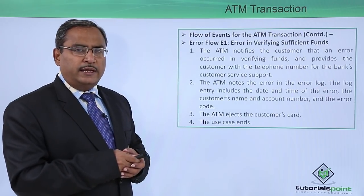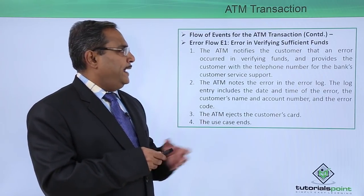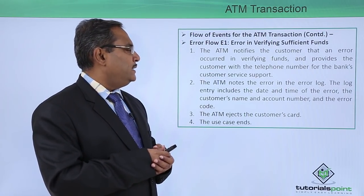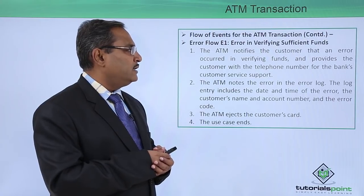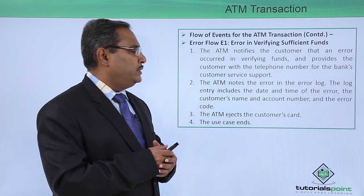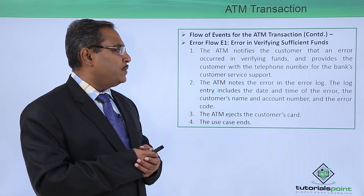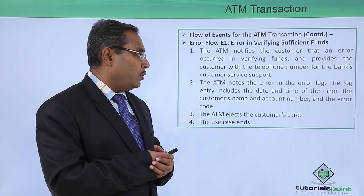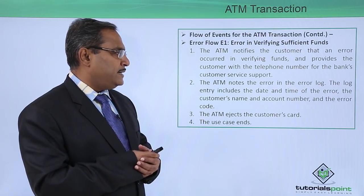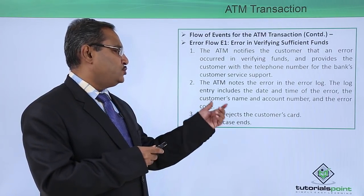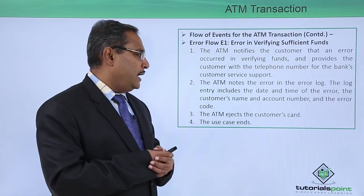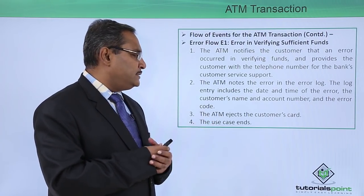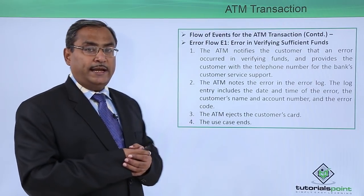Error flow E1 covers an error in verifying sufficient funds: the ATM notifies the customer that an error has occurred and provides the telephone number for the bank's customer service support. The ATM notes the error in the error log, including the date and time of the error, the customer's name and account number, and the error code denoting the error type. The ATM ejects the customer's card and the use case ends.